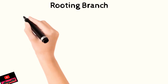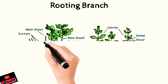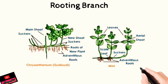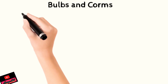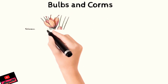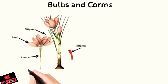The third type is rooting branch. This branch or shoot is a woody shoot and it grows along the ground and brings out roots. It is mostly found in mint and gul-e-daudi. Now we will study the fourth type, which is called bulbs or corms.